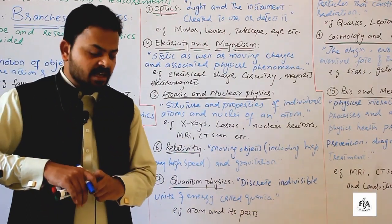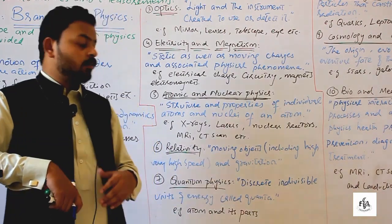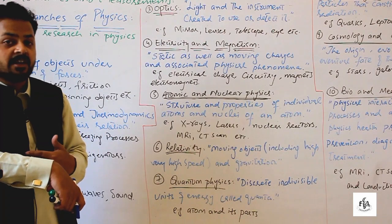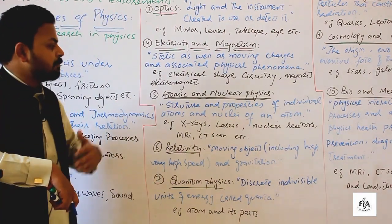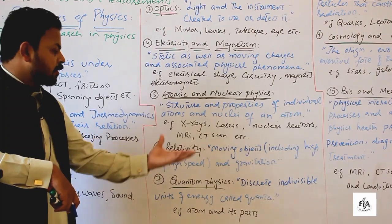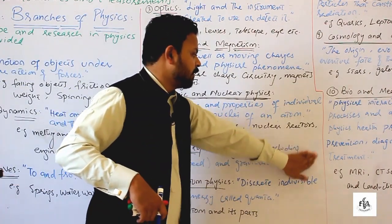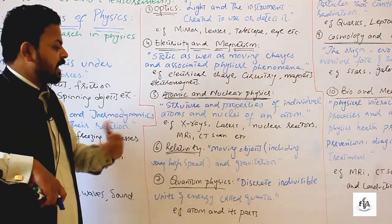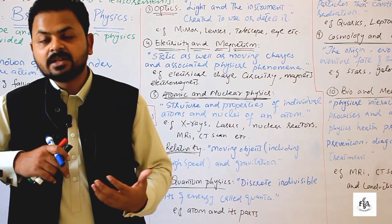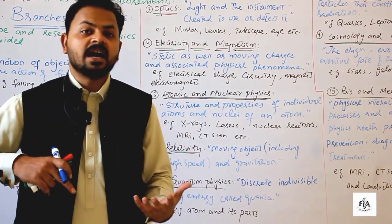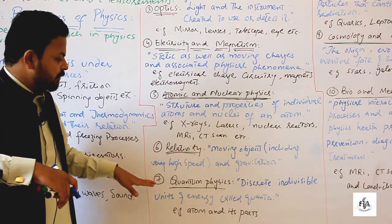The sixth branch is relativity, a very interesting branch of physics. Most of the work was done by Einstein, who is also known as the father of modern sciences. Relativity deals with moving objects at very high speeds and gravitational effects.